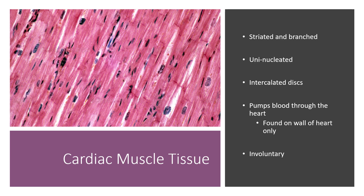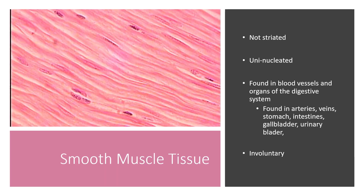Cardiac muscle is striated like skeletal muscle, but it's also branched, uninucleated, and has intercalated discs. Cardiac muscle is only found on the wall of the heart — it pumps blood through the heart and is under involuntary control. Smooth muscle is not striated and is also uninucleated. You can find it in blood vessels and organs of your digestive system — arteries, veins, stomach, intestine, gallbladder, and the urinary bladder — and it's also under involuntary control.